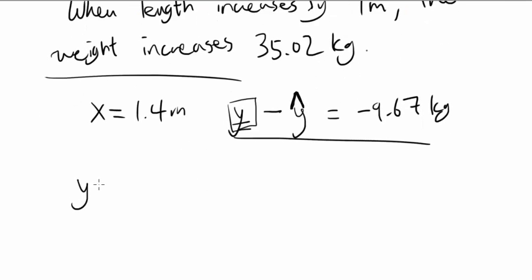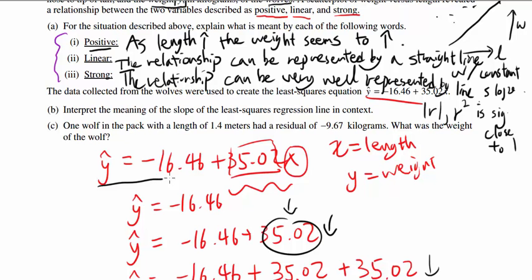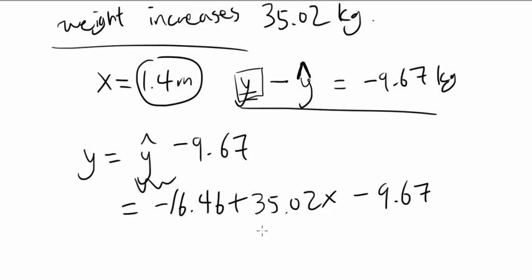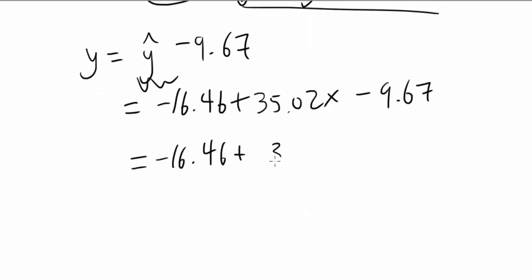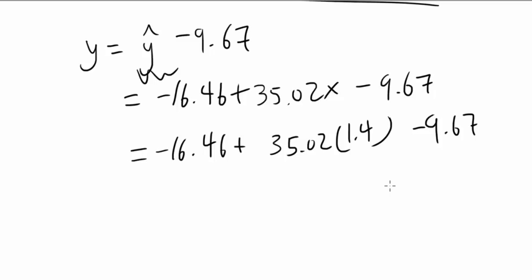How do we find Y? Well, if you look at this, you know Y is equal to Y hat minus 9.67. And we also know they gave us Y hat is negative 16.46 plus 35.02X. So we can plug this in: negative 16.46 plus 35.02X minus 9.67. And we know the X is 1.4. Negative 16.46 plus 35.02 times 1.4 minus 9.67 gets us 22.898 kilograms. And that's it. Thank you.